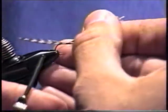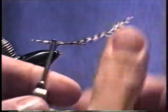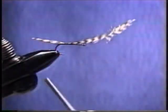But what this feather imitates is the shuck, the trailing shuck that gets somewhat translucent after the adult's pulled out of it.